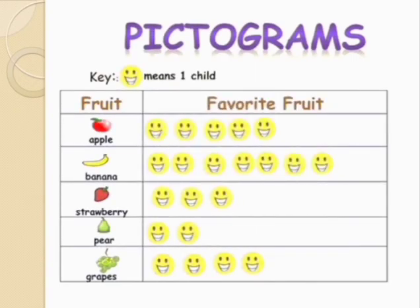Here the key is given: one face means one child. See, the fruits are mentioned in the given table. The first fruit is apple. How many students like it? Five students like apple.